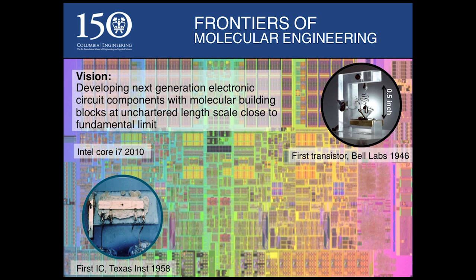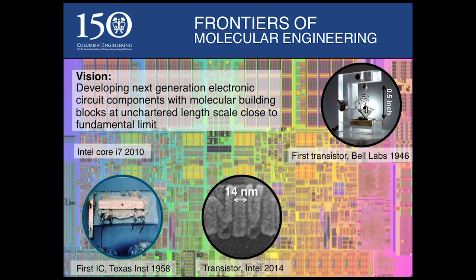Intel, in 2010, created a processor — that's what's shown in the background here — that had over a billion transistors all packed into a chip. Today, Intel is able to create a transistor that's only 14 nanometers across. This is a scaling of a factor of a million down from the original one — a great achievement — but what we are trying to do is go much beyond this.